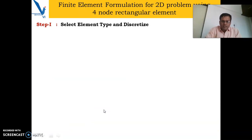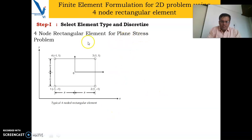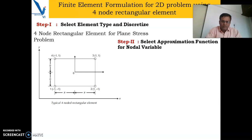The first step is to select the element type and discretize. For any 2D domain, we can either use triangular shape elements or rectangular element shapes to discretize that domain. We are considering the plane stress condition here, and we are using a four-node rectangular element to discretize the domain. We will see the formulation for one such element.